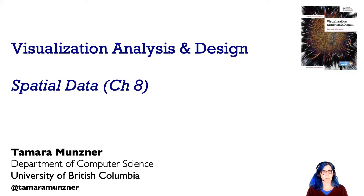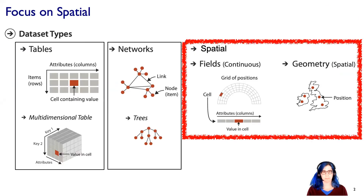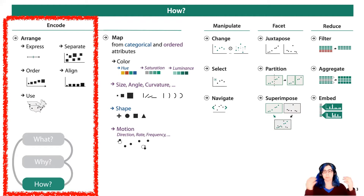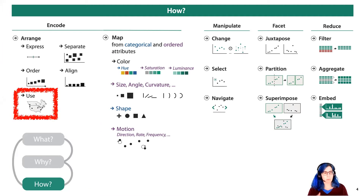Let's continue on with visualization analysis and design, talking about spatial data. We've talked about the idea that there are three different kinds of data sets: tables, networks, and spatial. When we think about how to use the visual channels of spatial position with both tables and networks, we think about expressing a quantitative attribute or separating into categorical regions. But now, for spatial data, we're really going to focus on the case of using given spatial data.